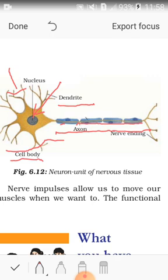The signal that passes along the nerve fiber is called a nerve impulse. Nerve impulses allow us to move our muscles when we want to. The functional combination of nerve and muscle tissue is fundamental to most animals. This combination enables animals to move rapidly in response to stimuli. So today we have completed this chapter. Thank you children.